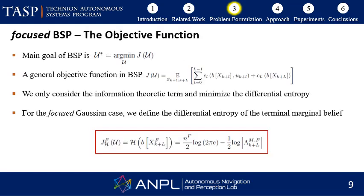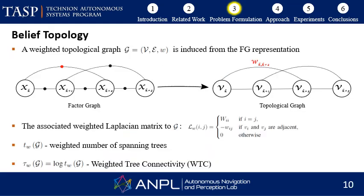Any belief space planning problem is basically an optimization problem. While each cost function can have a number of different terms such as distance to goal and energy spent, in this work we only consider the information theoretic term of a terminal belief and aim to minimize the differential entropy. Given a multivariate Gaussian posterior belief and taking the maximum likelihood observations assumption, the differential entropy of a marginal belief over a predefined subset of focused variables is given by j, where n superscript f is the dimension of the focused subset and lambda superscript mf is the marginal information matrix associated with the focused variables. Note that for Gaussian distributions, calculating this matrix usually requires a computationally expensive Schur complement operation even if the set of focused variables is small.